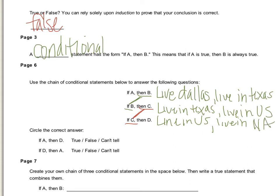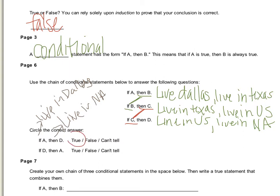The first question asks: if A is true, then is D true? We're trying to determine if that is actually a true statement. Well, if A is true — you live in Dallas — then D is true, meaning you live in North America. That is in fact a true statement. If you live in Dallas, Texas, then you do live in North America. So that is always going to be true. You can always jump from A to D, from one end to the other, as long as there is a connection in the middle.